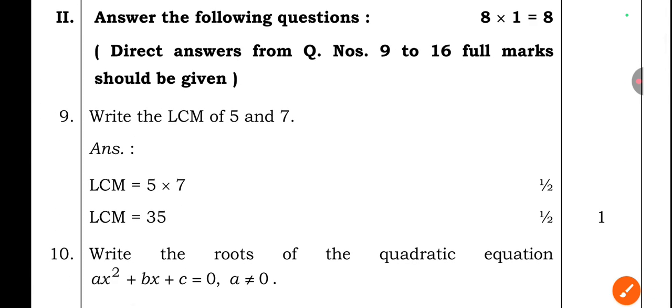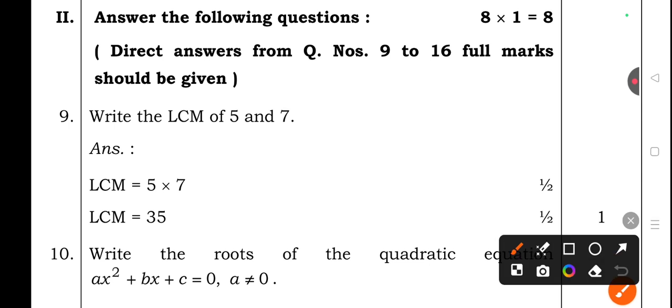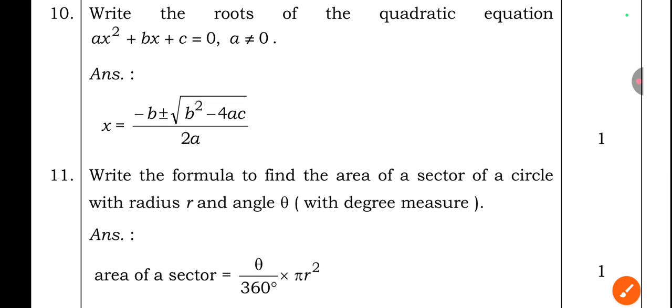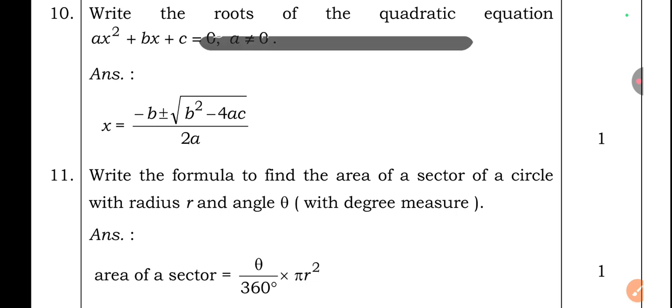Question section 2: Answer the following, each carrying one mark, total 8 questions. Question 9: Write the LCM of 5 and 7 — answer: 35. Question 10: Write the roots of the quadratic equation ax² + bx + c = 0 (a ≠ 0). The formula is x = (−b ± √(b²−4ac)) / 2a.